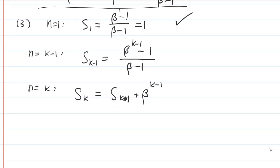So from here, then we plug in the formula. That's going to be beta to the k minus 1 minus 1 over beta minus 1. This is from our assumption over here. Right? This is the one. This is the inductive assumption.